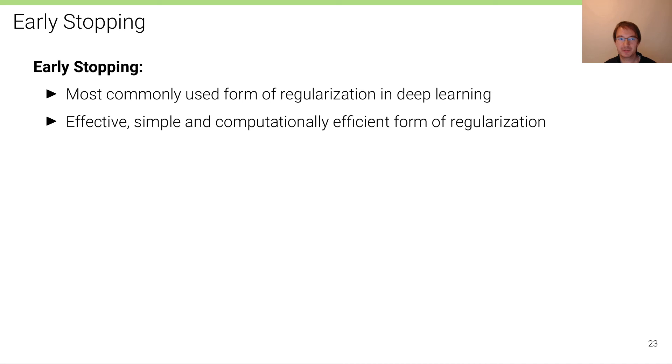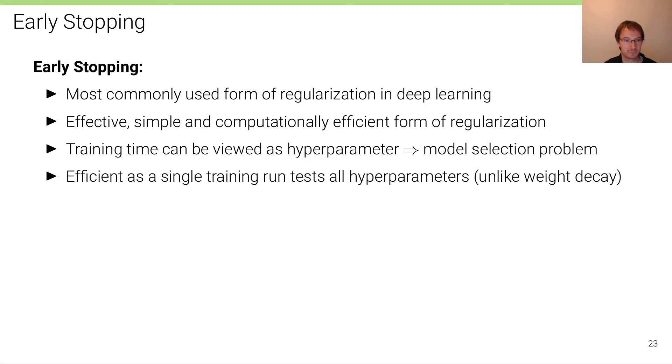Here's a summary of the simple early stopping strategy. It's the most commonly used form of regularization in deep learning. It's very effective, simple, and computationally efficient, and that's also one reason for its popularity. In early stopping, the training time, the number of iterations or the number of epochs, can be viewed as a hyperparameter.